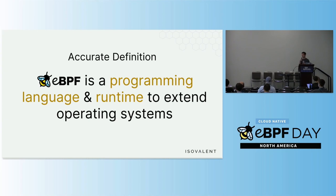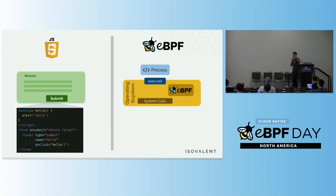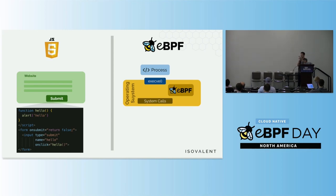That sounds very abstract. A more practical comparison: eBPF is like JavaScript or Lua, but for kernel developers. On the left we have JavaScript — you use it to run some code when some event happens, for example when a user clicks a button and submits a form. On the right we have eBPF — very similar, but you run eBPF programs in the kernel when some event happens, such as when a system call is invoked, a network packet is processed, or a file is accessed.